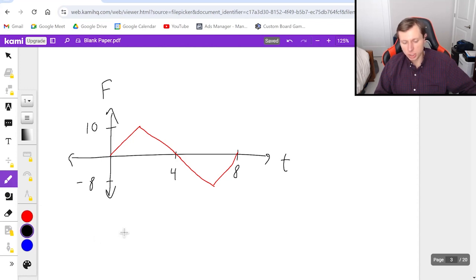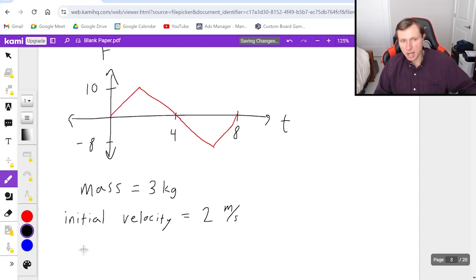But now let me ask the question. I'll tell you that this was the impulse graph, or the force versus time graph, for an object with a mass of three kilograms. This object had an initial velocity of positive two meters per second. And my question is, I want you to find the final velocity of this object.